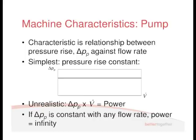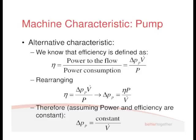Well, what's the alternative then? We know that efficiency, we talked about efficiency before, and we know that efficiency is the output power divided by the input power. So power to the flow divided by the power consumption. And we know that the power to the flow is delta P times V dot. So we can replace power to the flow with this, and I've replaced power consumption with big P.